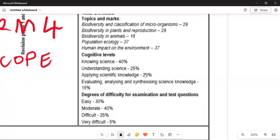According to this, we are given the cognitive level. The cognitive is the magnitude in terms of the depth of the paper. 40% of this paper consists of knowing the science, understanding the science is 25%, and 20% for applying scientific knowledge.